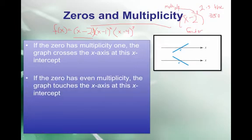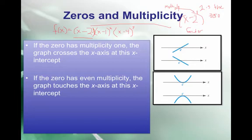If the zero has even multiplicity, the graph touches the x-axis. Given even multiplicity, we just simply sit on or touch the x-axis at that zero. An example here is the factor x minus 1 squared — the power is 2, which is even. So at x equals 1, we're just going to touch the x-axis.